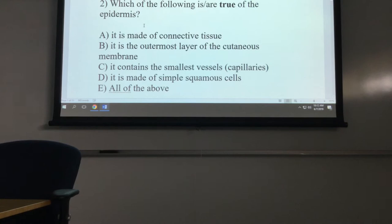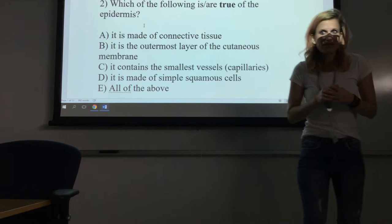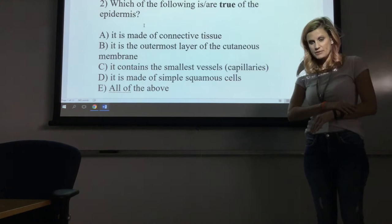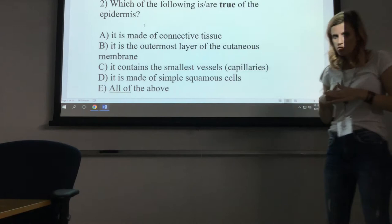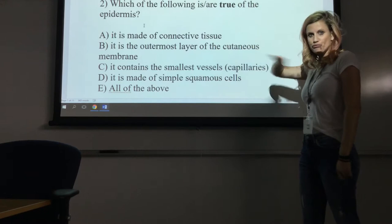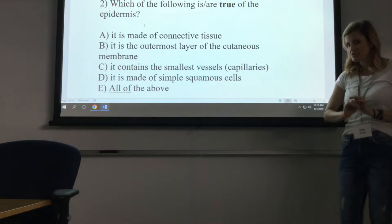Which of the following is or are true of the epidermis? Think about it first. Remember that the epidermis is the most superficial or top layer of the skin. It has four or five layers depending on whether it's thick or thin skin. The epidermis is made of epithelial tissue, so it's avascular. All of these things should be in your head before you even look at the choices. So which of the following is true? It is made out of connective tissue? No — we just said it's epithelial tissue, specifically stratified squamous epithelial tissue.